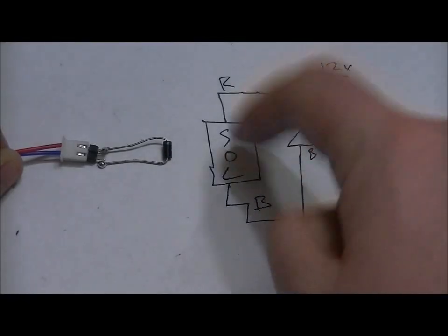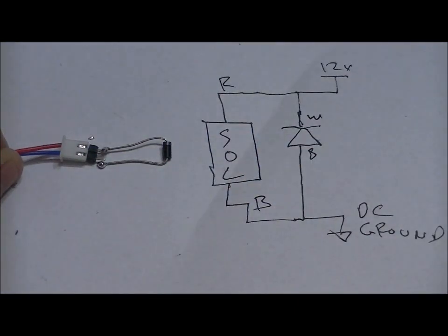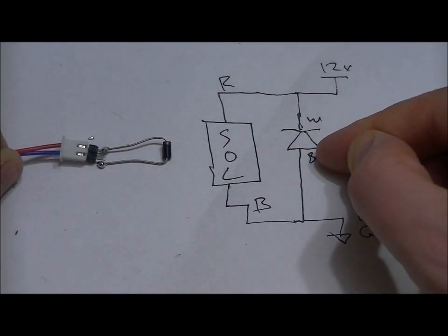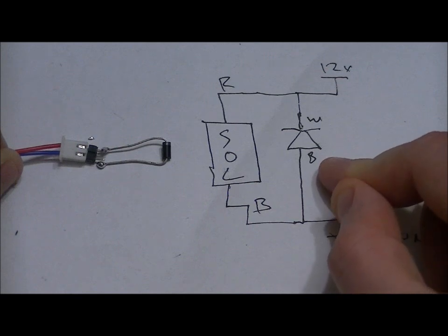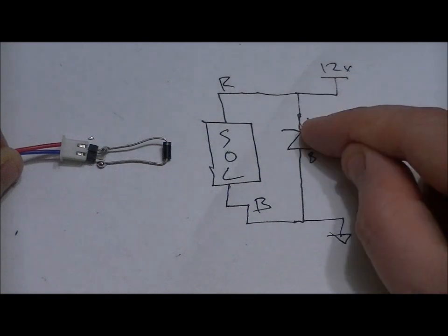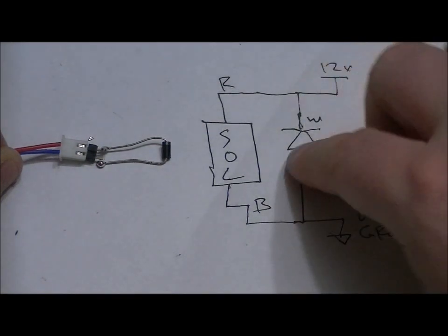Here's the diagram. Here's your solenoid, red wire, black wire. This is your diode. This is the white side. This is the black side. Black side is anode, positive. White side is cathode, negative. We're actually connecting the negative side to 12 volts.